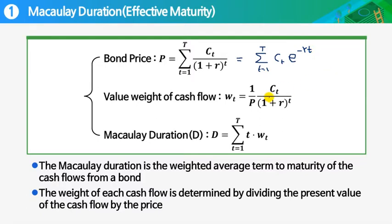Now, value weight of the cash flow. So for each cash flow, the present value of this cash flow is like this one, right? At time t, cash flow occurs by the amount of ct, and we discount it back, then it is the present value of that particular cash flow.